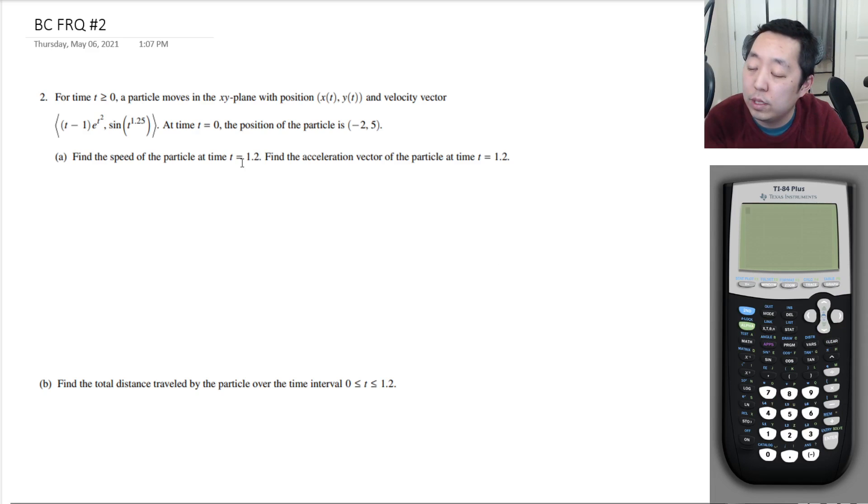For time t greater than or equal to zero, a particle moves in the xy plane with position x of t, y of t, and velocity vector given by that. At time t equal to zero, the position is that. Find the speed of the particle at time t equals 1.2 and find the acceleration vector of the particle at times. So they want the speed. Speed is the magnitude of the velocity vector.